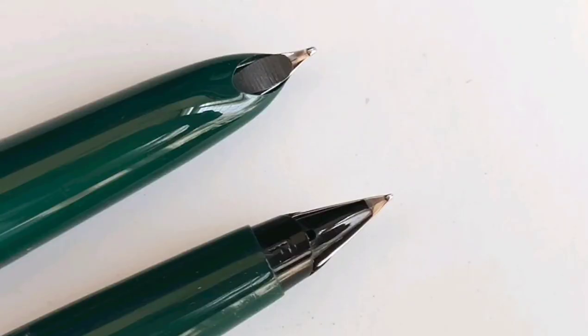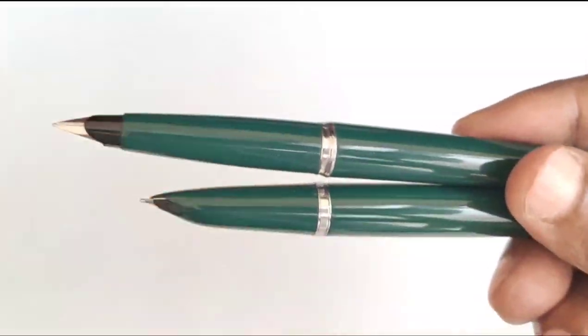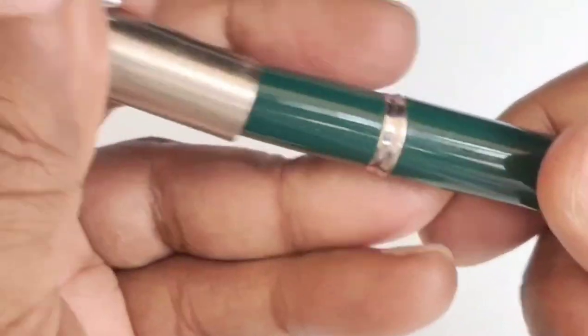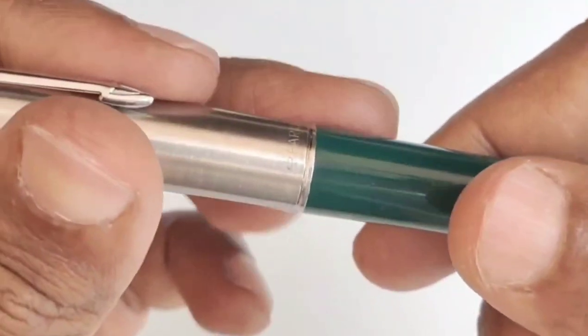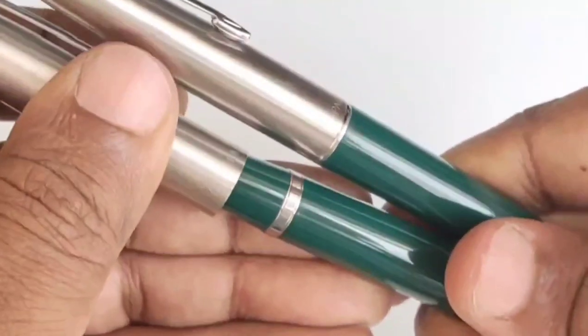Both 45 and 21 always come with plastic feeds. If we observe the capping of both models, the cap of 45 model stops at the clutch ring, while the cap of 21 goes beyond the clutch ring.